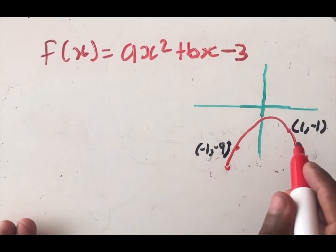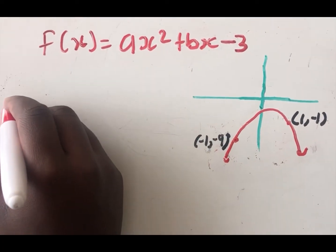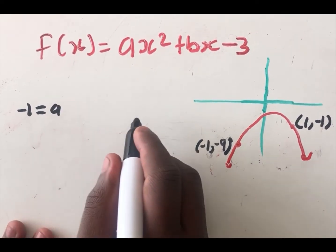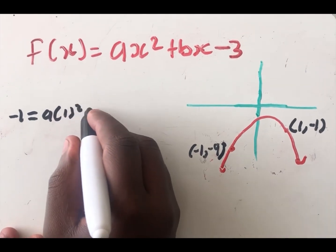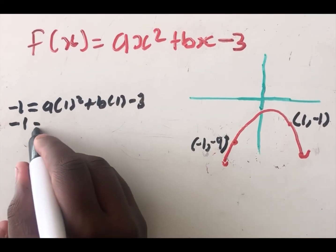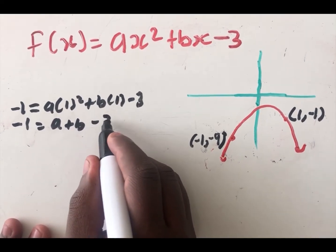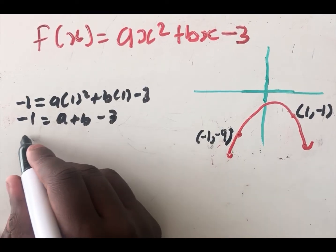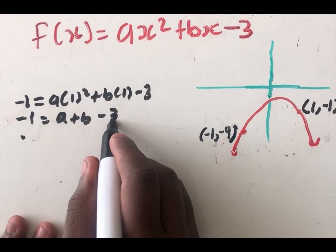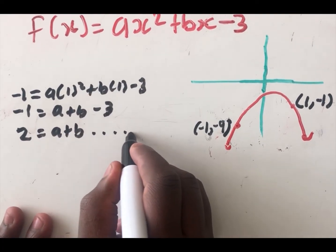Substituting the first point — y = −1, x = 1 — into the equation: −1 = a(1²) + b(1) − 3, which simplifies to a + b = 2. This is equation 1.